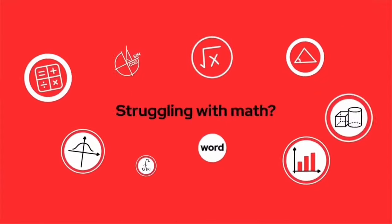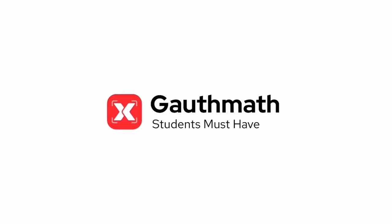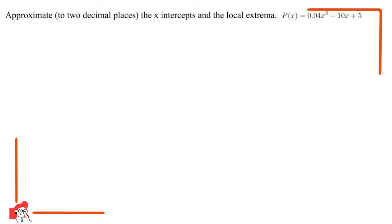Welcome to the Goth Math Class, let's make math so easy. Hello everyone, I'm your teacher for this question. The question says approximate to two decimal places the x-intercepts and the local extrema. We're given the function P(x) is equal to 0.04x³ - 10x + 5.